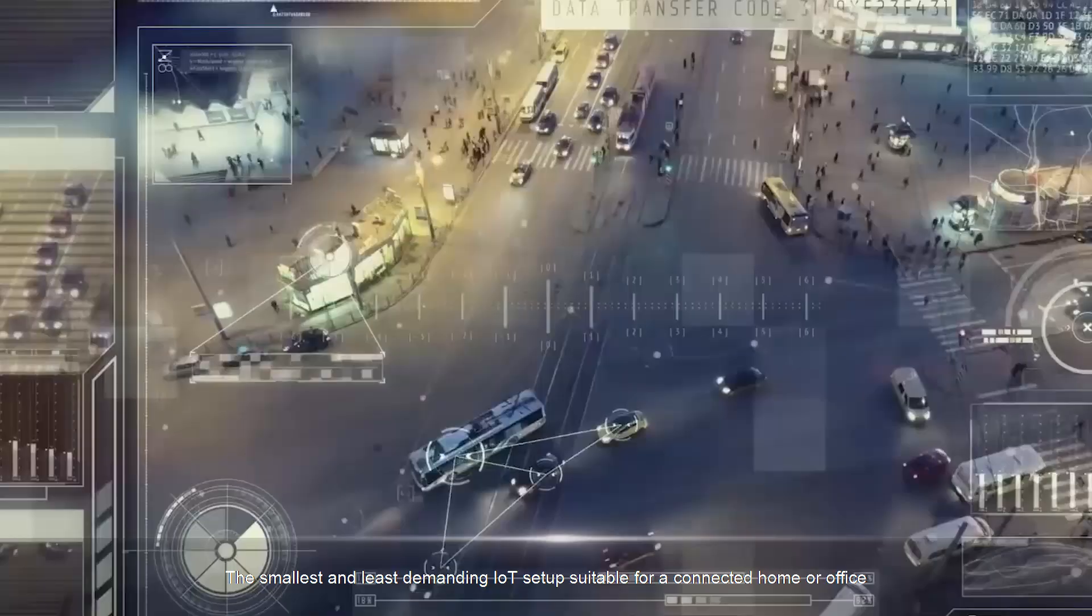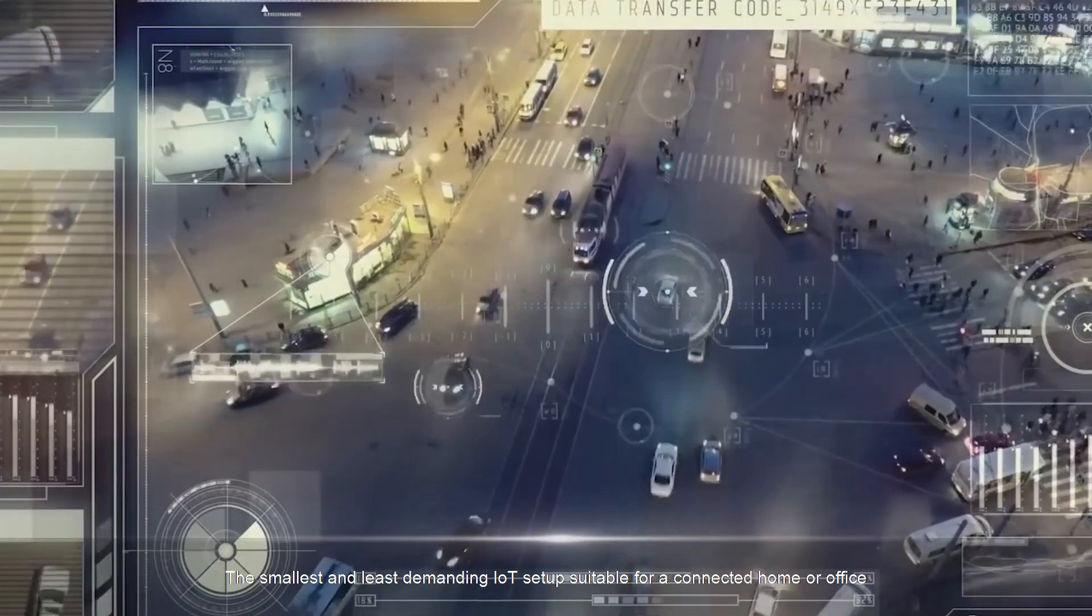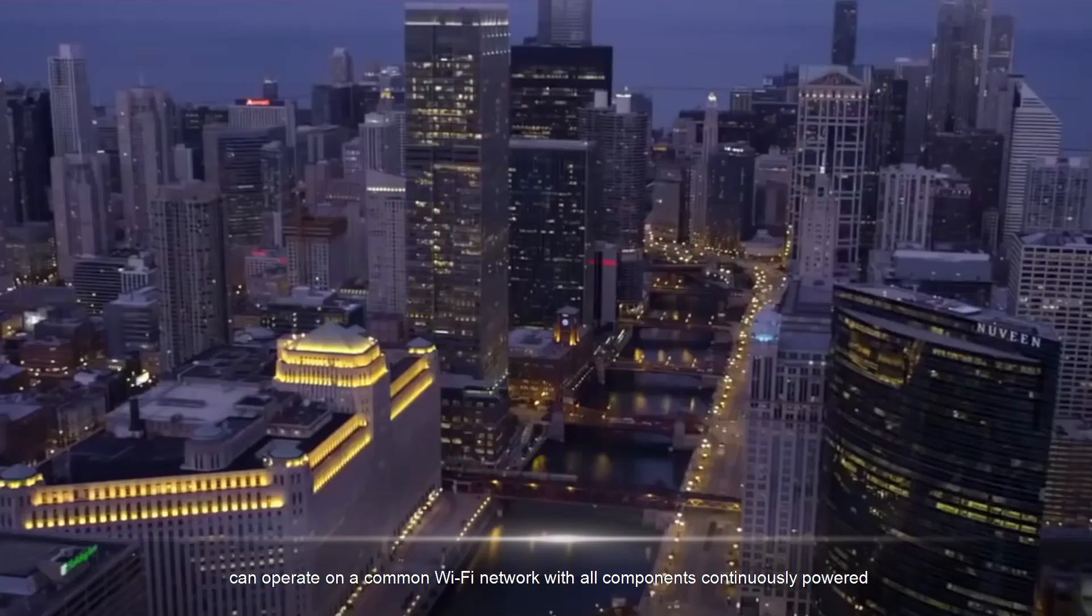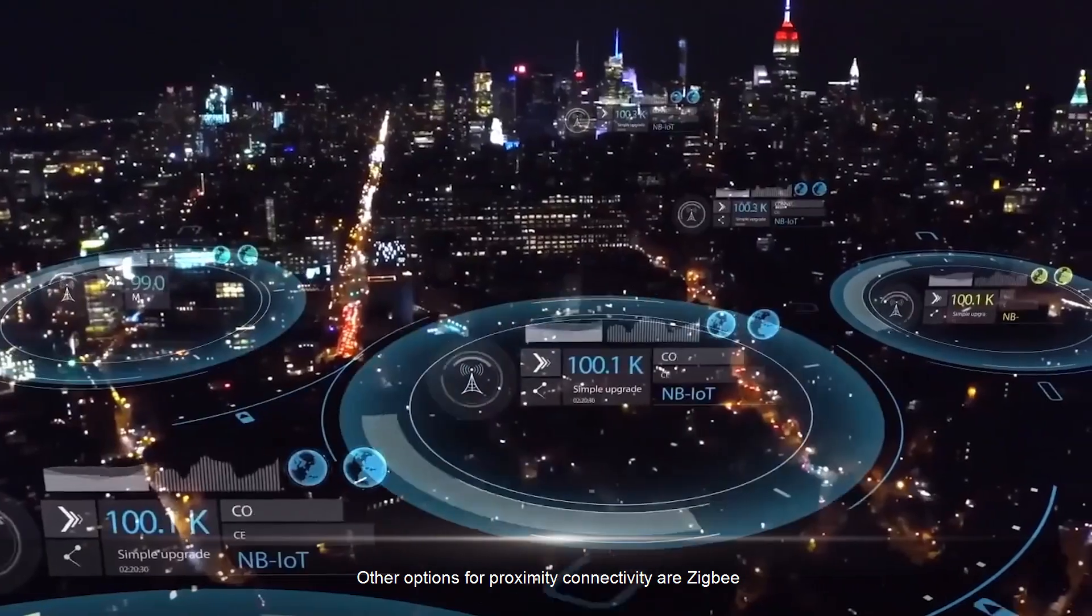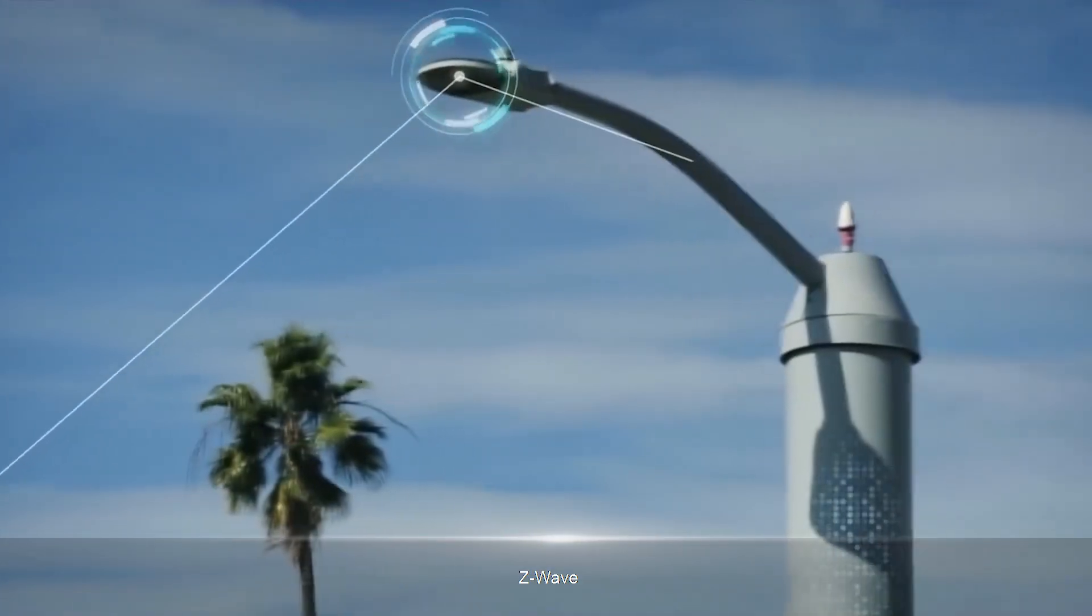The smallest and least demanding IoT setup suitable for a connected home or office can operate on a common Wi-Fi network with all components continuously powered. Other options for proximity connectivity are ZigBee, Z-Wave, and Bluetooth.